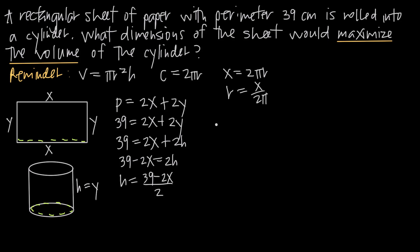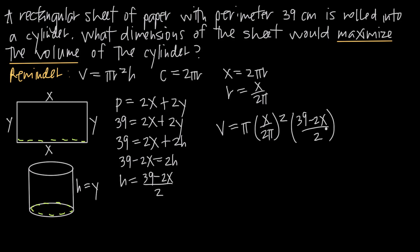Now in our volume equation we can make substitutions: V = π · (x/2π)² · h, where h = (39 − 2x)/2. Now the entire volume equation is in terms of one variable only — just x. Remember that π is a constant, not a variable, so the only variable in this equation is x.